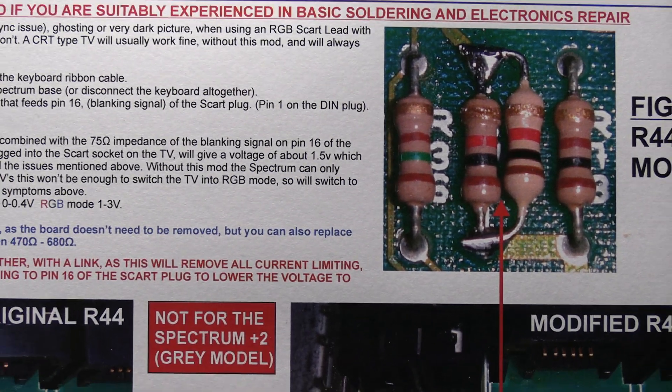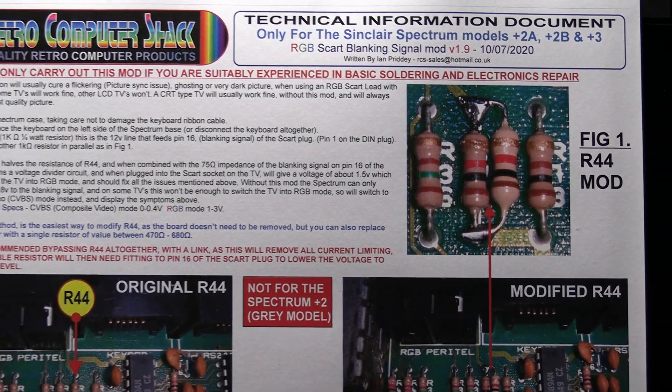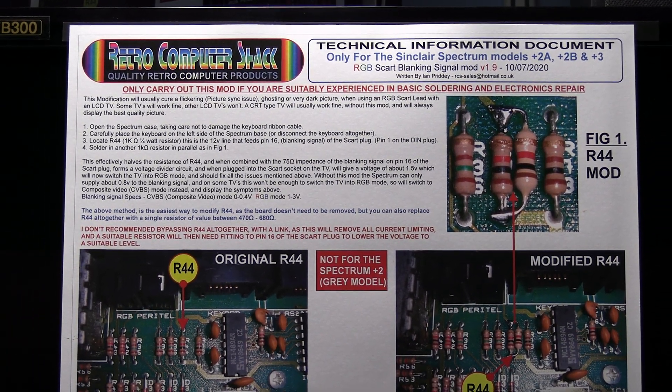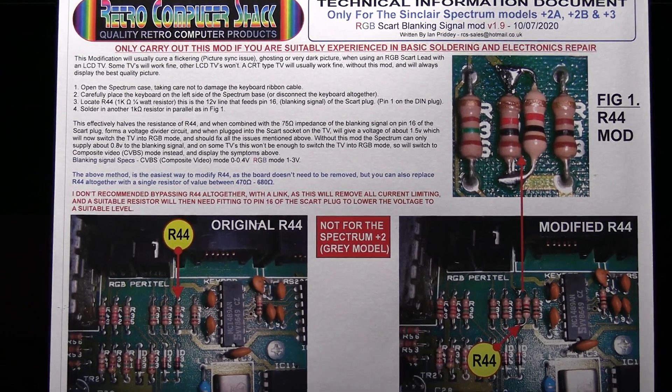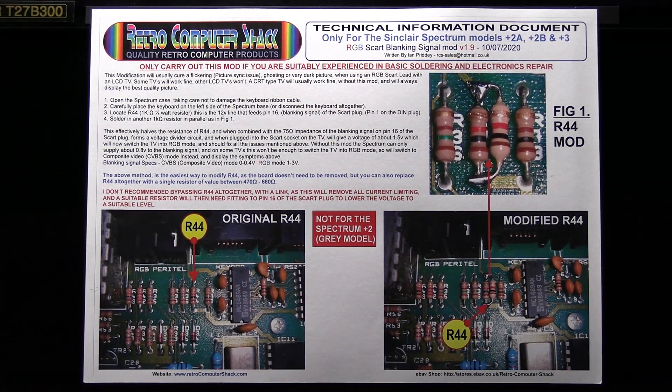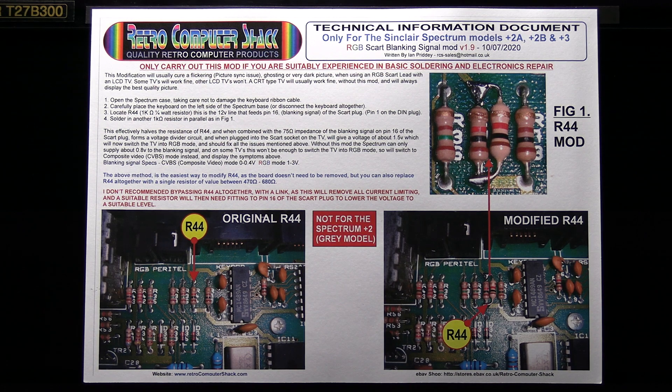This will then give you the 1.5 volt for the blanking signal and hopefully switch the TV into RGB mode and you won't have any of those display problems.